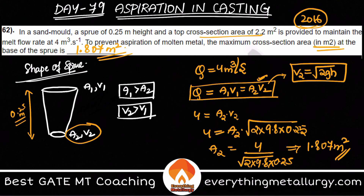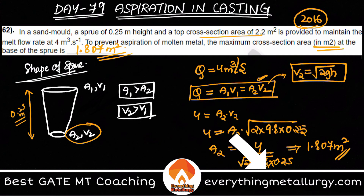This is what aspiration means and how questions can come up. Aspiration is prevented mainly by decreasing the area along the sprue. I think you have got an idea about what aspiration is. If you like it, please hit the like button and share with all the great metallurgy aspirants. We'll meet you in the upcoming videos — we have about 21 videos left. Thanks a lot for supporting 100 days 100 concepts and everything metallurgy. Stay tuned for updates about 2022 live classes. That's it from my side, guys. Thank you, thanks for watching.